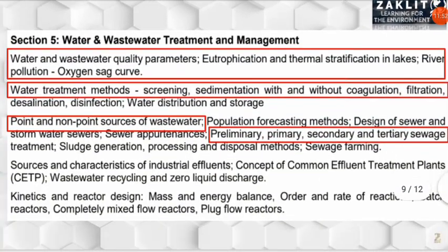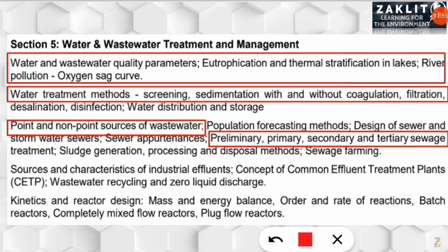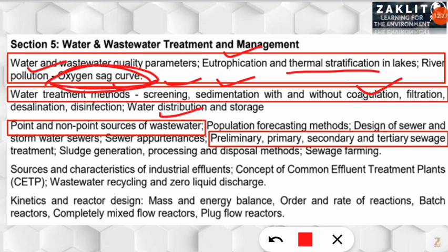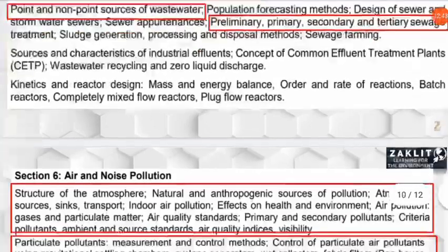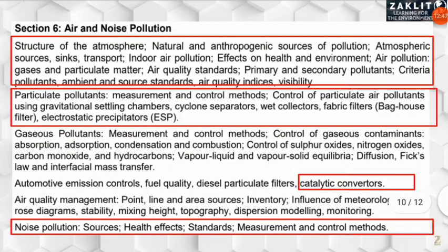Section 5 is Water and Wastewater Treatment Management. Topics include characteristics of eutrophic and oligotrophic lakes, thermal stratification, and the oxygen sag curve for river pollution. Wastewater treatment methods include screening, sedimentation, and coagulation — including why aluminium is used as a coagulant. You should also know point and non-point sources of wastewater, and the stages of sewage treatment: preliminary, primary, secondary, and tertiary.